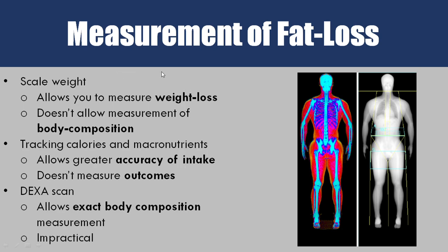So how do we measure fat loss? We have a few different methods. First, scale weight — jumping on the scale to see how much you weigh. That measures weight loss, but the scale doesn't tell you how much fat versus muscle you have; it doesn't tell you your body composition, just your total weight. That's useful, but it has limitations.